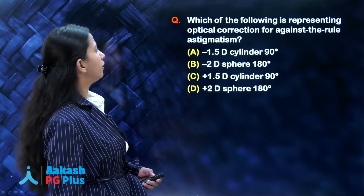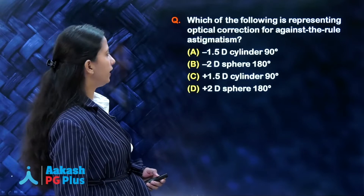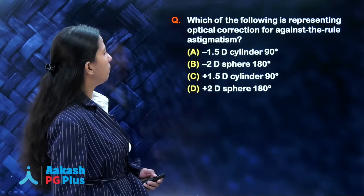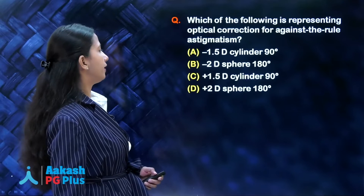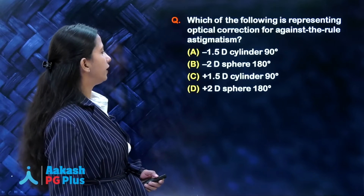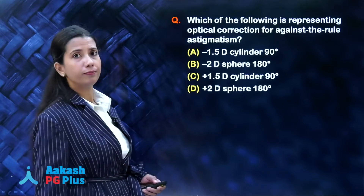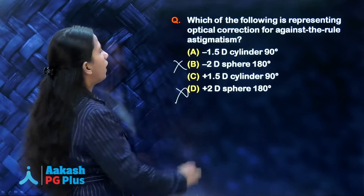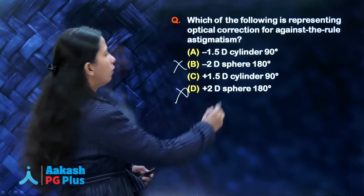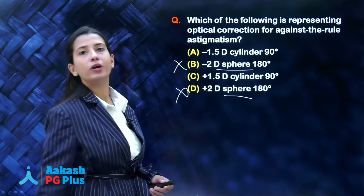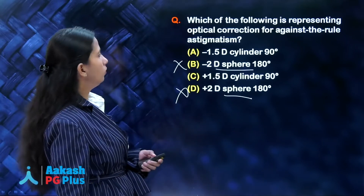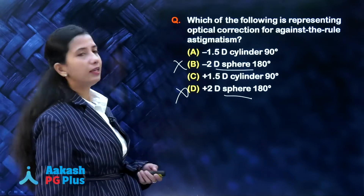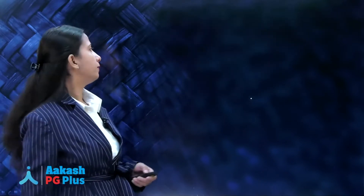The options are: minus 1.5 cylinder at 90, minus 2 sphere at 180, plus 1.5 cylinder at 90, or plus 2 sphere at 180. At first look, the two sphere options are out because when you have a sphere, you do not have an axis. The options remaining are A and C.